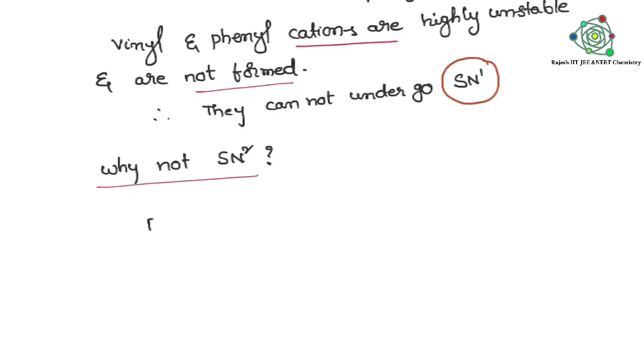You know very well, if you see that structures of vinyl halides and phenyl halides, halogen atom which is attached to those groups, it shows plus M effect, plus mesomeric effect. Who is showing? Halide ion. So due to this plus M effect here...